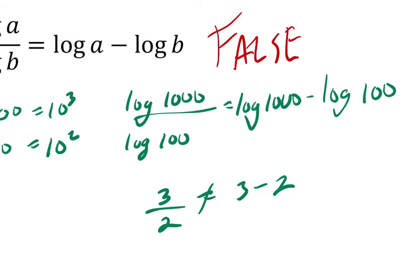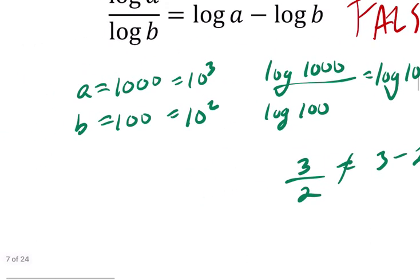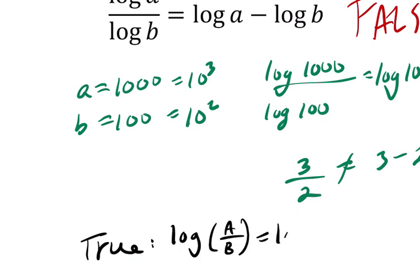What does the true statement look like? The true statement, the thing that they're playing off here, is that the log of a over b equals the log of a minus the log of b. So it looks somewhat similar, but that's what the true statement looks like. I hope this helped.